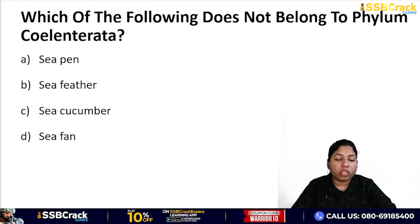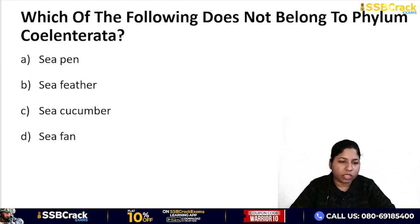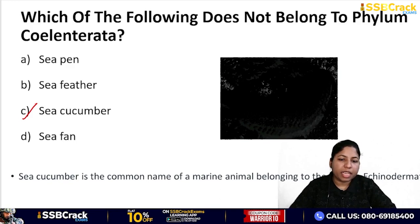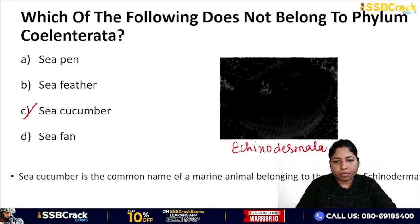Next question: which of the following does NOT belong to phylum Coelenterata? Options: sea pen, sea feather, sea cucumber, or sea fan. This can be confusing since all names start with 'sea.' You should know examples from each phylum. The correct answer is sea cucumber — it is a marine animal belonging to phylum Echinodermata, not Coelenterata.